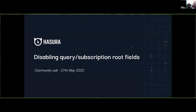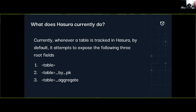We're going to bring on Karthik to talk about hiding root level fields — a brand new feature inside of Hasura. So today I'm presenting a new feature I've been working on: disabling query and subscription root fields. Currently, whenever you track a table in Hasura, it will automatically expose three root fields: select, select by primary key, and select aggregate. Select aggregate requires the role to explicitly allow aggregations.